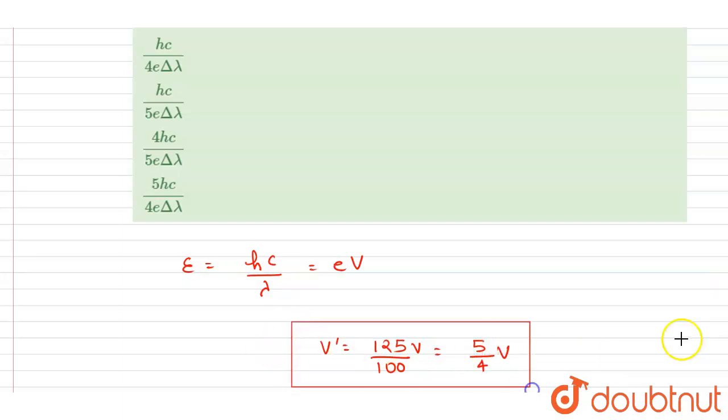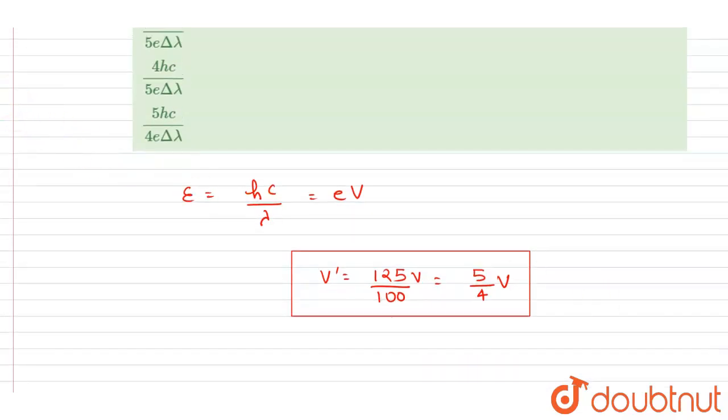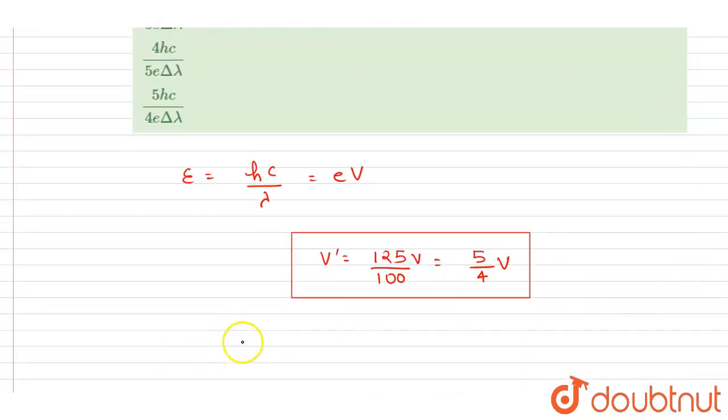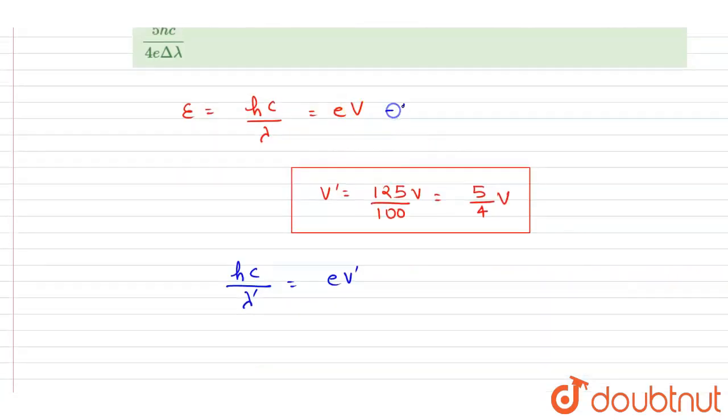So it is 5 by 4 V. So this is the new voltage. And if you see here, it is said in the question that the wavelength shifted by delta lambda.